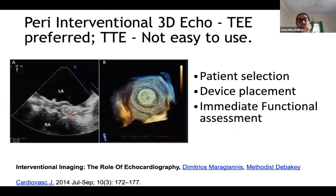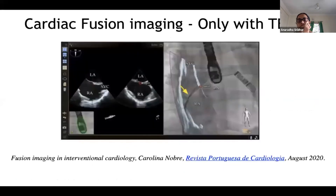For 3D echo in the cath lab, it is used for patient selection, device placement, and immediate functional assessment, and this is currently possible only with trans esophageal echo — trans thoracic echo is not easy to use for assisting intervention in 3D. Cardiac fusion imaging is the latest advancement, where echo images are overlaid on fluoroscopy images to reduce fluoro time, reduce contrast use, and improve procedural success. This advanced imaging is also possible only with trans esophageal echo.